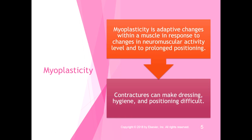For example, with elbow flexion contractures you might not be able to reach down far enough to propel a wheelchair. I've worked with people who had elbow flexion contractures and we used ultrasound, moist heat packs, manual therapy, manual stretching, and dynamic splinting to decrease the contractures. After several weeks in PT, I've gotten people to the point where they could actually propel the wheelchair on their own.